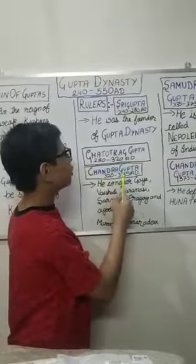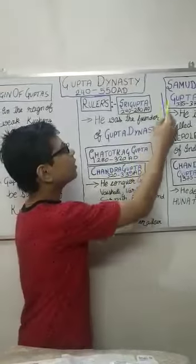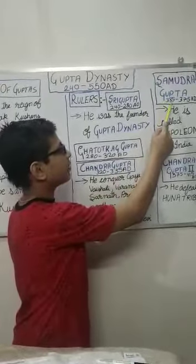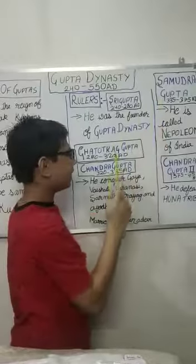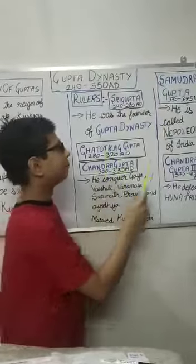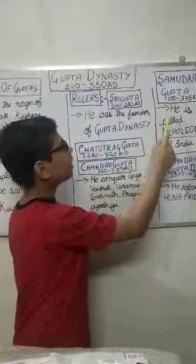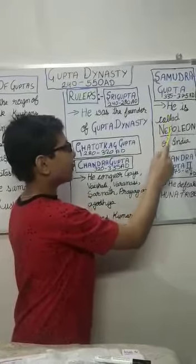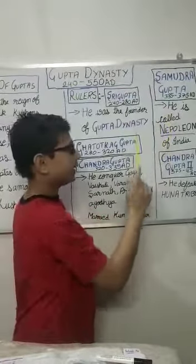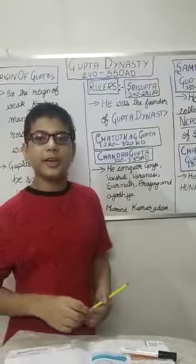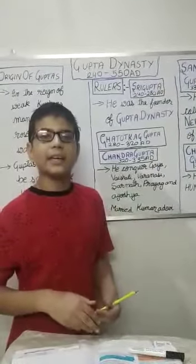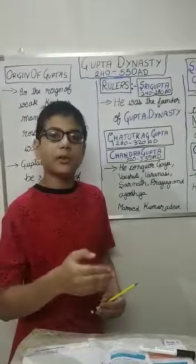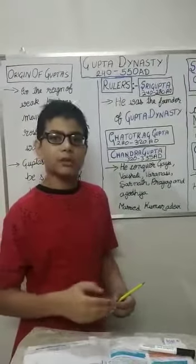Now, Chandra Gupta's son, Samudra Gupta, became ruler in 325 AD. Samudra Gupta is known as the Napoleon of India because he defeated 9 kings of North India and 12 kings of South India.